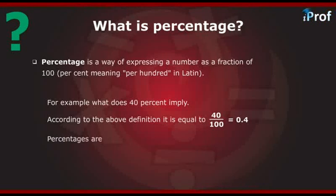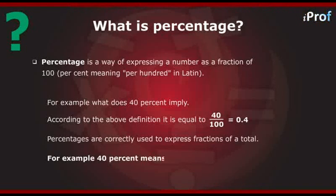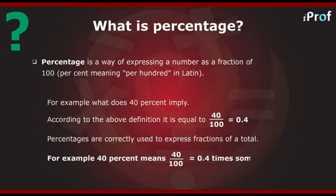Percentages are correctly used to express fractions of a total. For example, 40% means 40 divided by 100, equal to 0.4 times the sum total.